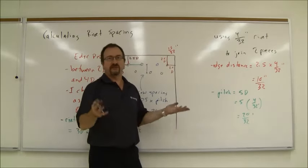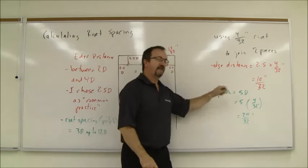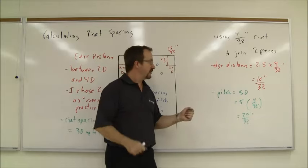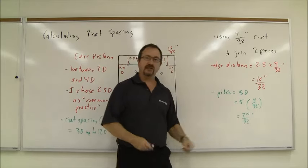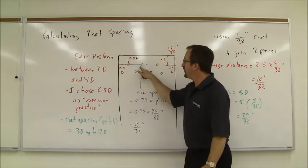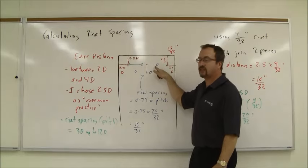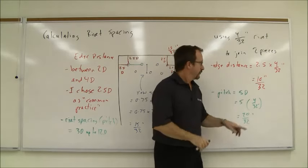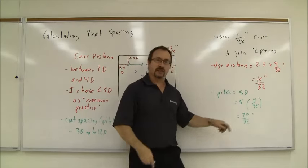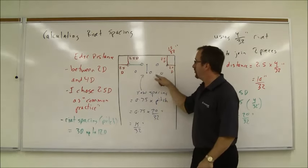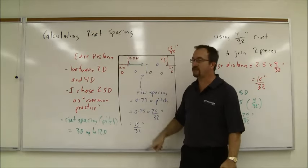I chose, just for the sake of easy math, five times the diameter. That's between three times and twelve times. Five times 4/32nds is 20/32nds. What that means is each rivet, the space between them in the single row, is 20/32nds of an inch. Same thing in this row, which is forced by the fact that they're centered and offset.